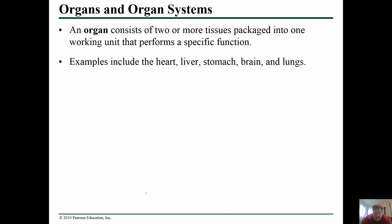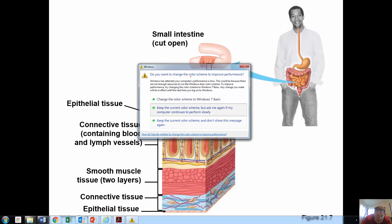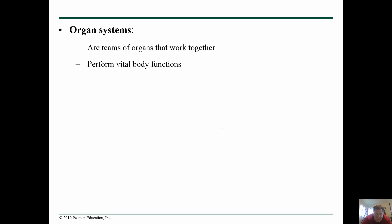An organ consists of two or more tissues packaged into one working unit that does a specific function. Things like the heart, liver, stomach, brain, and lungs are all organs. We have epithelial tissue on the outer surface, and this tissue is involved in absorbing nutrients from the gut.